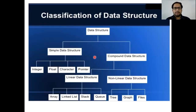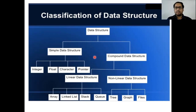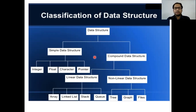Now let's discuss about data structure. Data structure is basically a place where we can store the data, and an algorithm is a process that will be applied on the stored data so that we can get the desired result. If you see this diagram, data structures are divided into two parts: simple data structure and compound data structure.